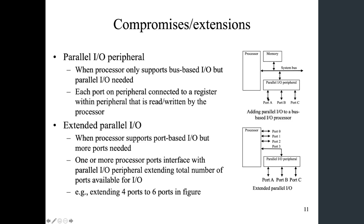If your processor supports only bus-based IO, the processor will need an address bus and data bus to access other components. If you really need parallel IO ports, you can attach a parallel IO peripheral to the bus — this acts as a secondary controller, and you can redirect registers to access port A, B, or C. The other option is extended parallel IO, where you have ports you can access by name, but you can also extend this using a parallel IO peripheral to access additional ports.